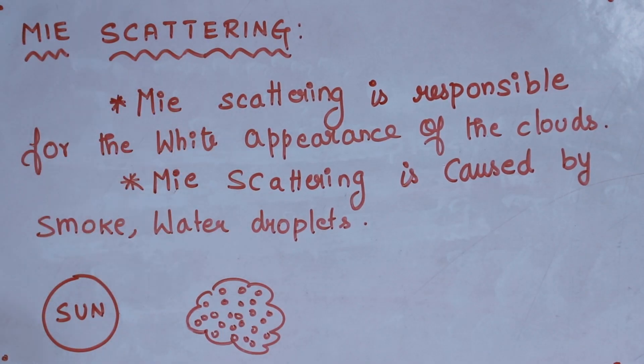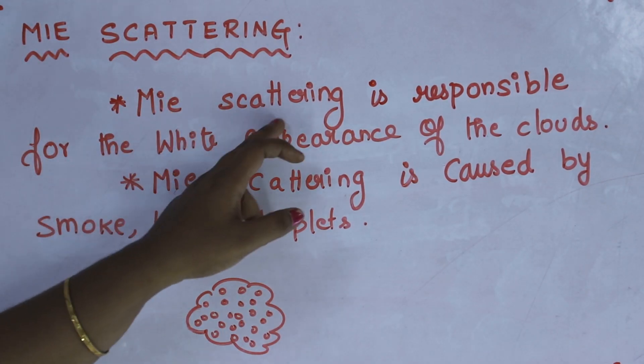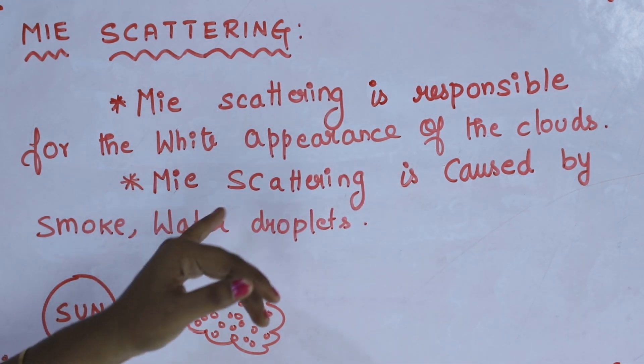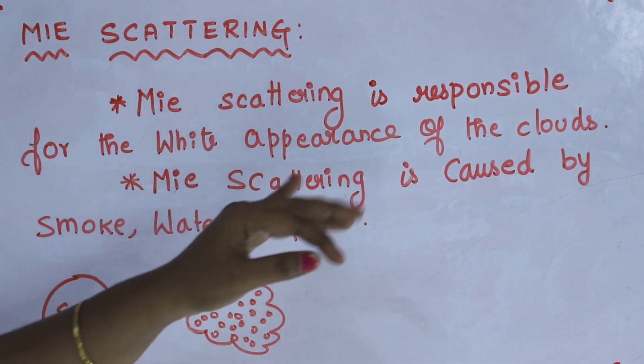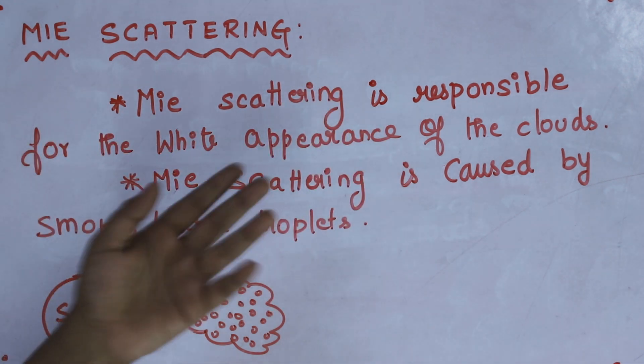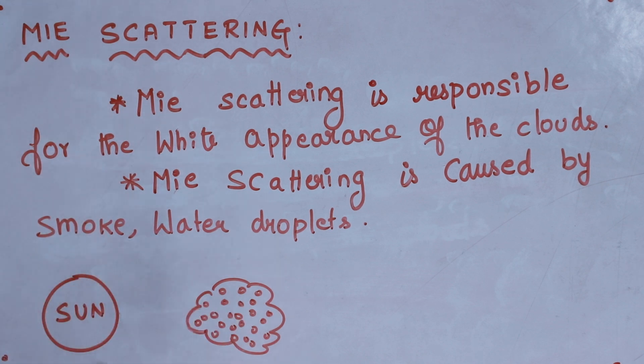Mind scattering. Mie scattering is actually responsible for the white appearance of the clouds. It is caused by smoke and water droplets.